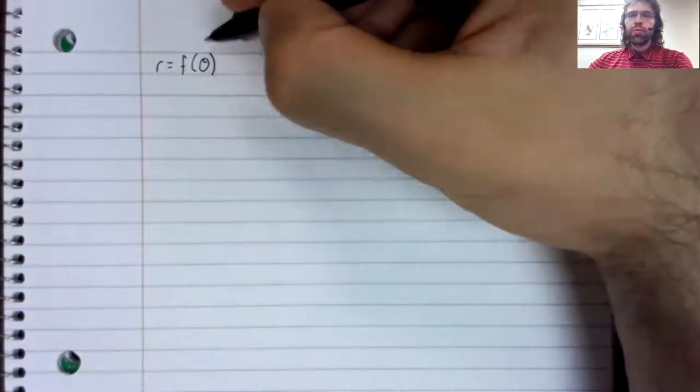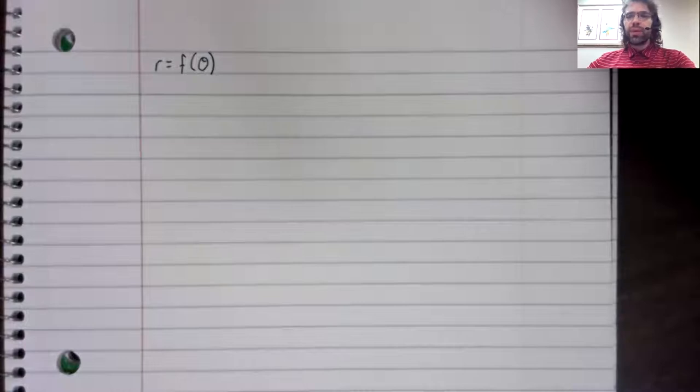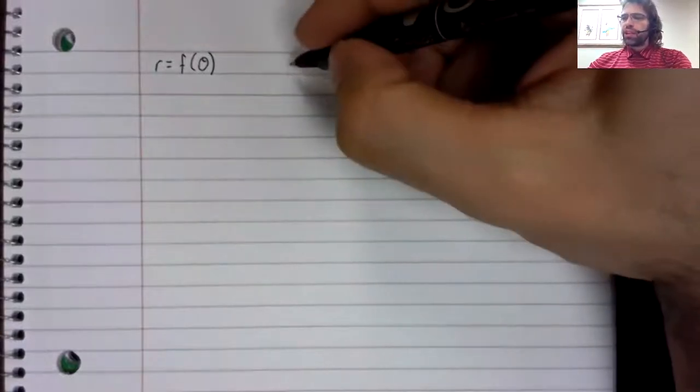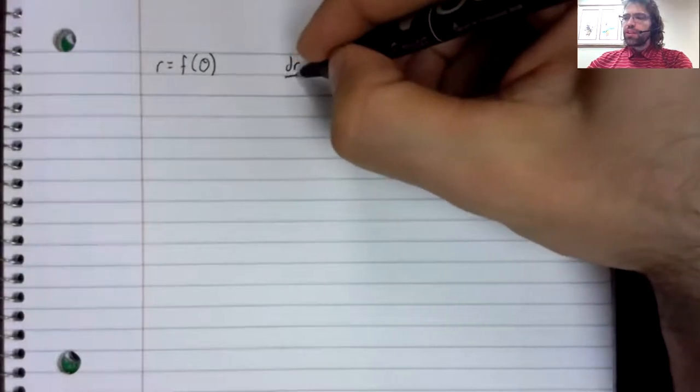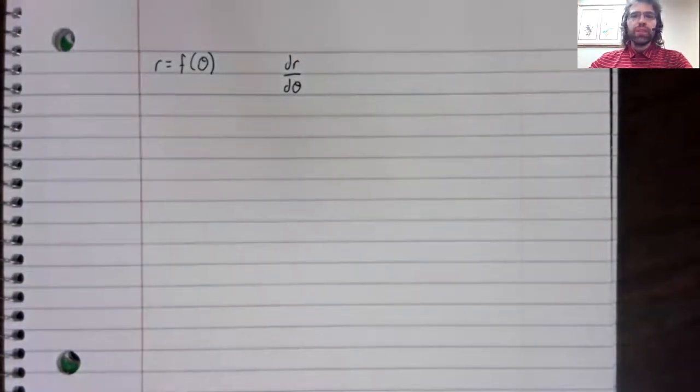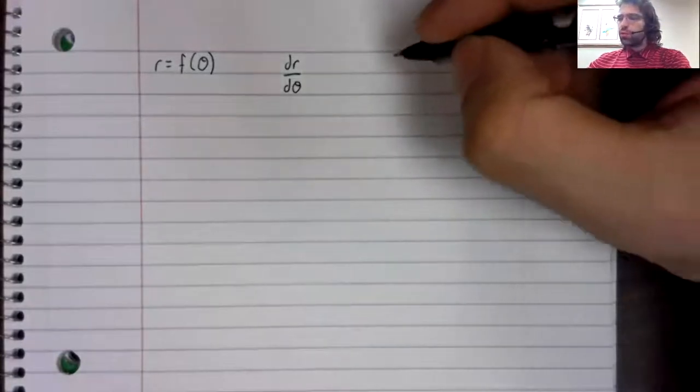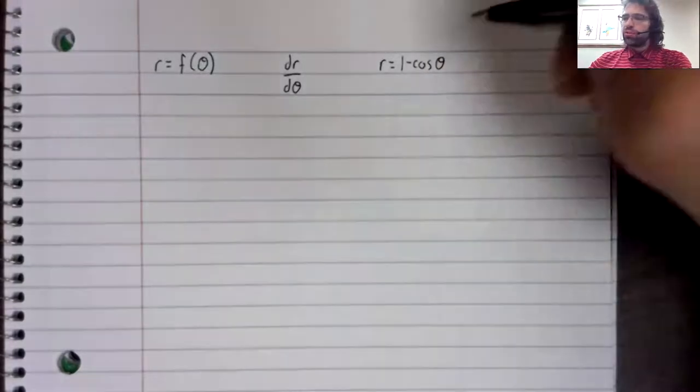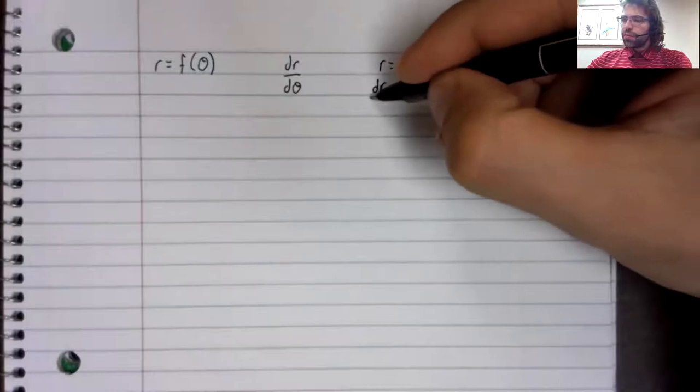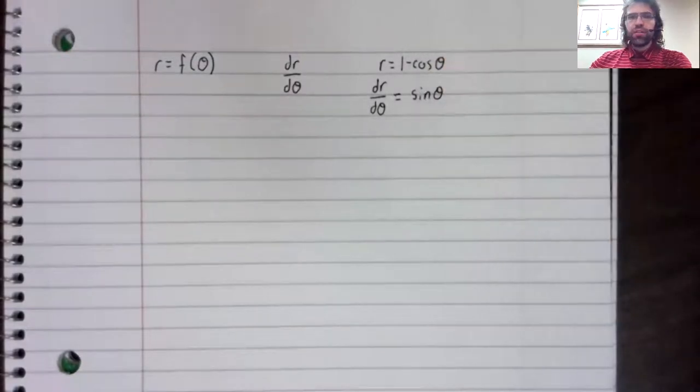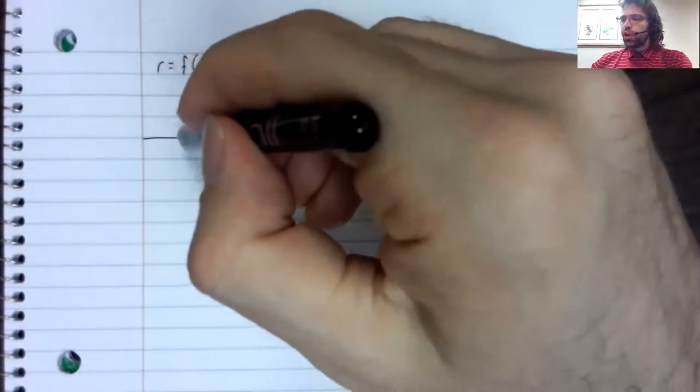we think of theta as our independent variable and r as our dependent variable. And we can take the derivative of the dependent variable with respect to the independent variable in the usual way. So if, for example, r equals one minus the cosine of theta, then dr/dθ is the sine of theta. No problem there.